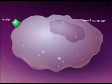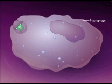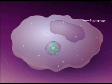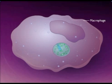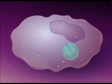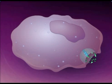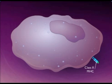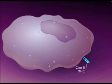Antigens, such as bacteria or viruses, are usually ingested and degraded into small fragments by phagocytes such as macrophages. The small fragments are then complexed with a special type of protein called a Class II major histocompatibility complex protein, MHC, and transferred to the surface of the phagocytic cell.